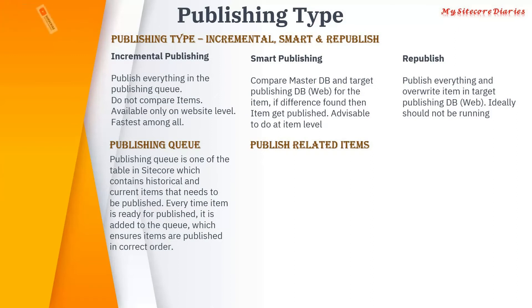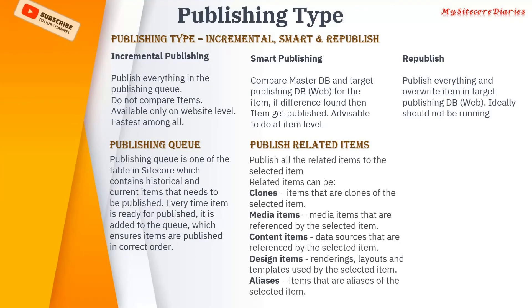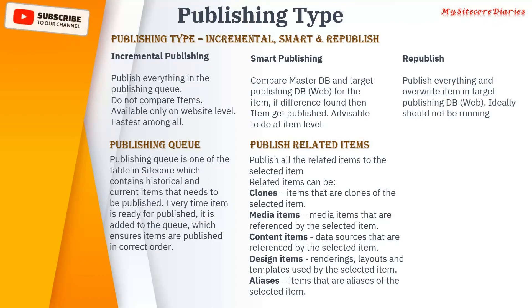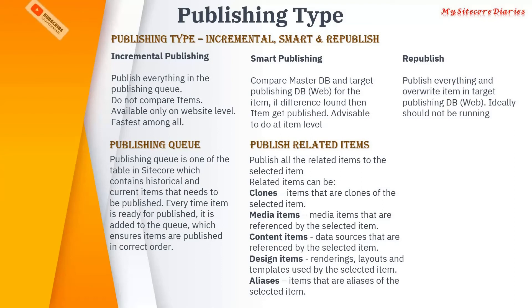There is a checkbox in the publishing wizard called 'Publish Related Items'. What this means is that for the item you have selected, any referenced or related items will also be published. What counts as related items? Sitecore considers clones of that item, any media items used in that item, any data sources used in that item, and any design elements such as rendering layouts or templates applied to that item.